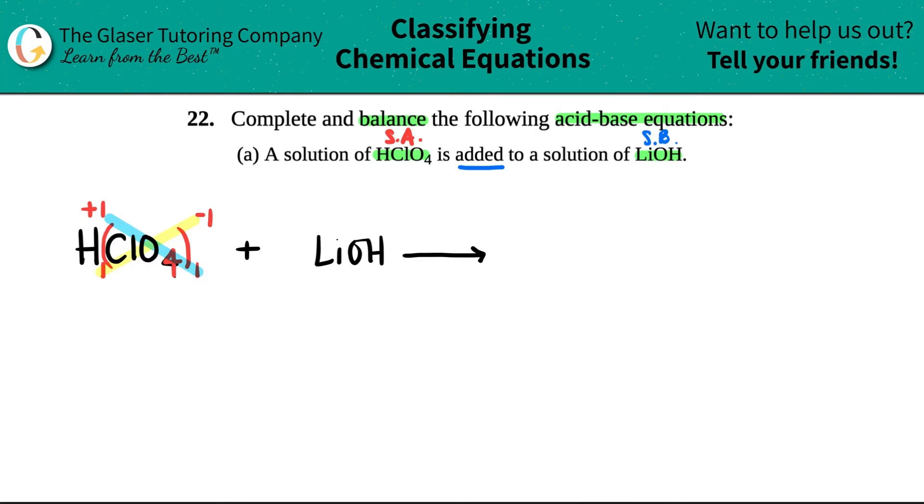Now, technically, I shouldn't have really did this on my balanced equation. So what I'm just going to do is I'm just going to copy and just so that we have room when we have to balance. So this tells me that my H was a plus one charge, H was a plus one and the ClO4 was a minus one.